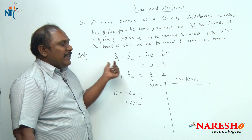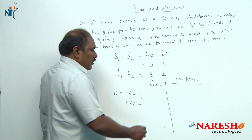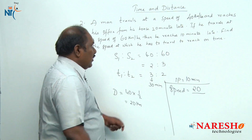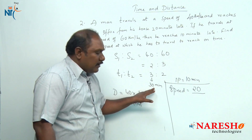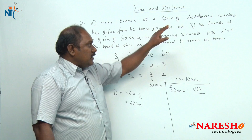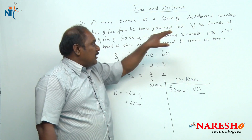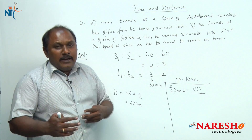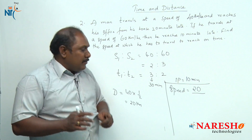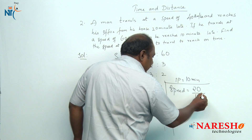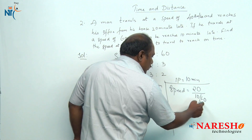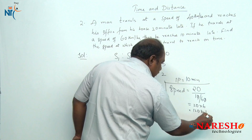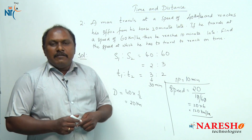We need to find at what speed he should travel to reach his office on time. Speed is distance divided by time — distance is 20 kilometers. Travelling at 40 kilometers per hour he takes 30 minutes, but he is late by 20 minutes. That means to reach his office on time he should take only 10 minutes. So 20 kilometers must be travelled in 10 minutes: speed = 20 ÷ (10/60) = 20 × 6 = 120 kilometers per hour. Travelling at 120 kilometers per hour, he will reach his office on time.